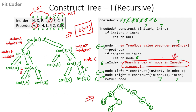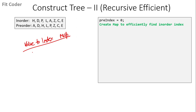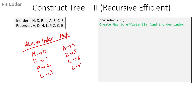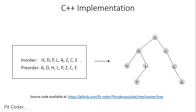We can make this more efficient by reducing the search step. In the efficient version, we create a map to efficiently find the inorder index - a value-to-index map. This tells us that H is at index 0, D at 1, P at 2, L at 3, A at 4, Z at 5, C at 6, and E at 7. When we need to find a node's index in the inorder traversal, we simply look it up in the map in O(1) time. By building this map, we reduce the overall time complexity of the algorithm to O(n).